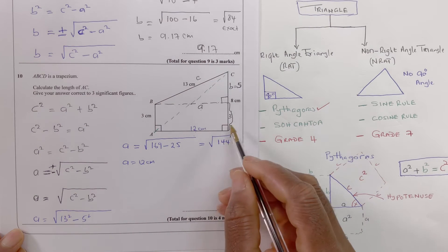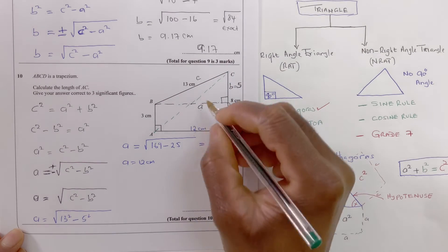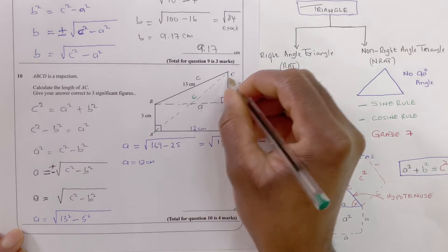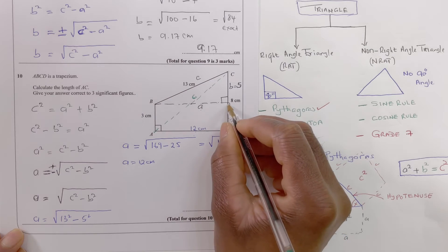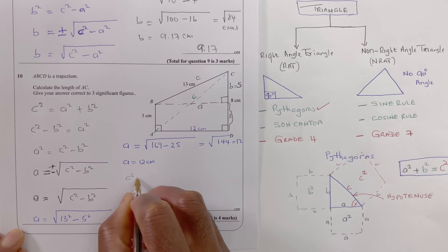Okay so I'm using the same thing now to find c. So to find this c here, the green one, now I know that's 12 and I know this is 8. So I can say c squared equals...